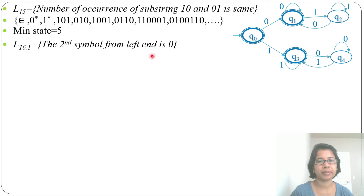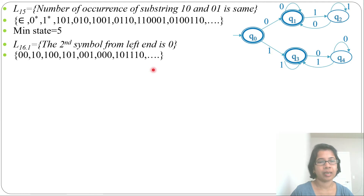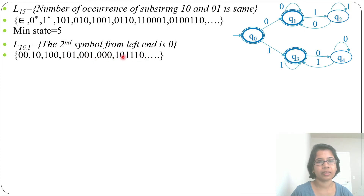Left means we write from left to right. The DFA will accept strings like '00', '10', '001', '101', '100', '110', and so on — wherever the second character is 0. We can write W as: first place can be 0 or 1, second place is 0 (fixed), then after that it can be anything — any string x. Let's design the DFA for this.